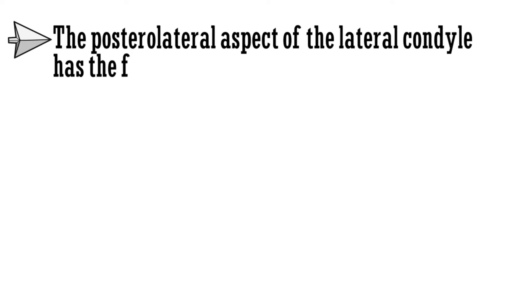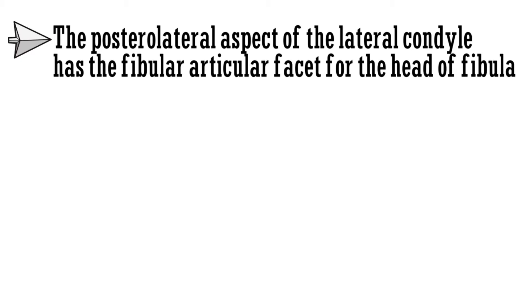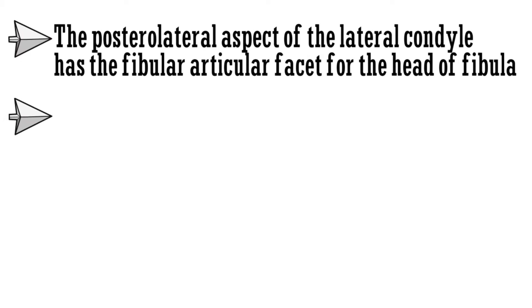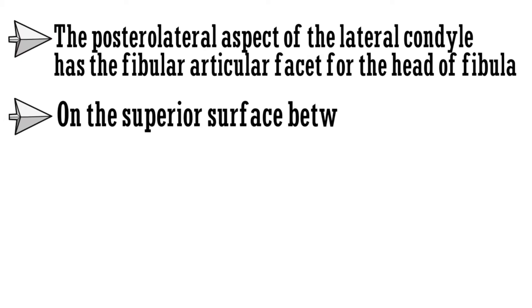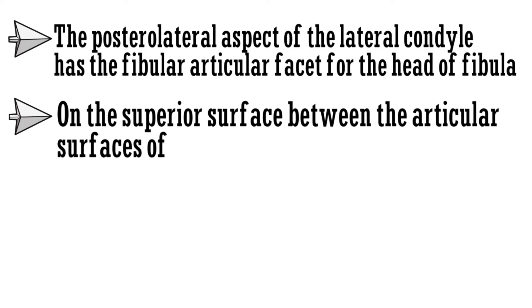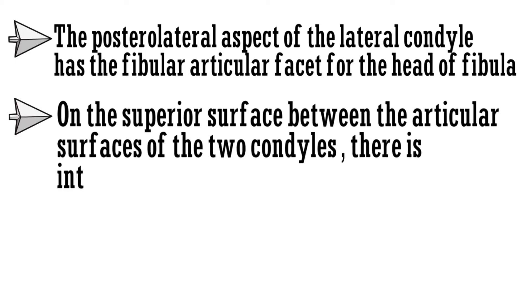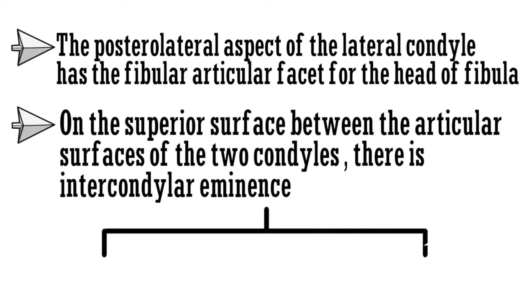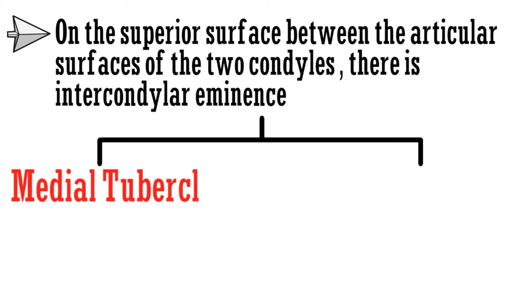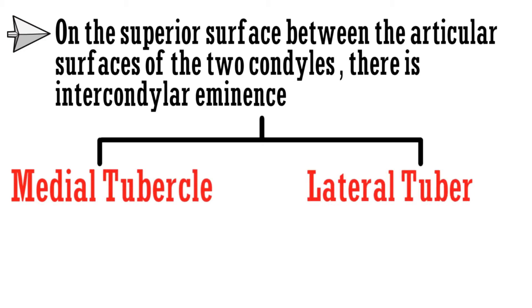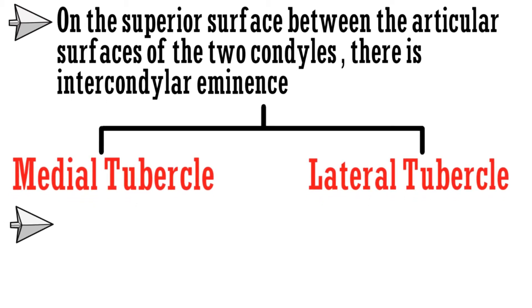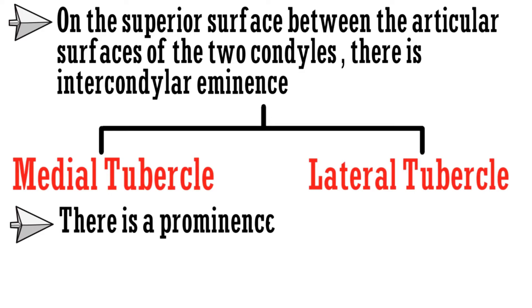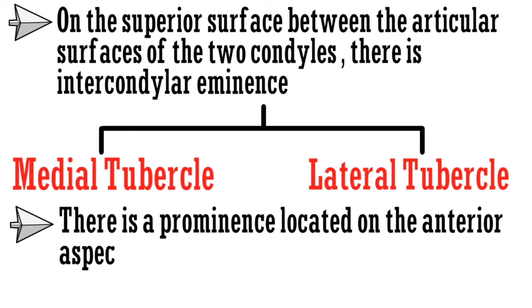Coming back to the proximal end. The posterolateral aspect of the lateral condyle has the fibular articular facet for the head of fibula. On the superior surface between the articular surfaces of the two condyles, there is the intercondylar eminence, which is flanked by two tubercles — the medial tubercle and lateral tubercle. There is also a prominence on the anterior aspect of the upper end of tibia called the tibial tuberosity.